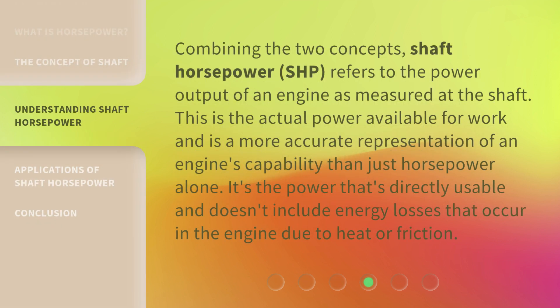Combining the two concepts, shaft horsepower, or SHP, refers to the power output of an engine as measured at the shaft. This is the actual power available for work and is a more accurate representation of an engine's capability than horsepower alone. It's the power that's directly usable and doesn't include energy losses that occur in the engine due to heat or friction.